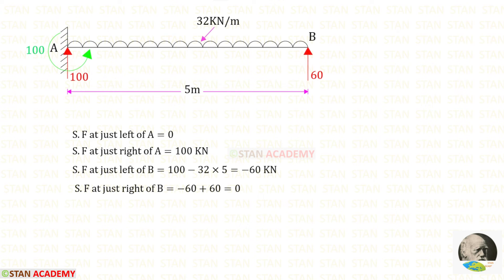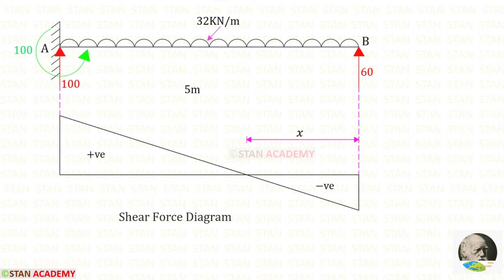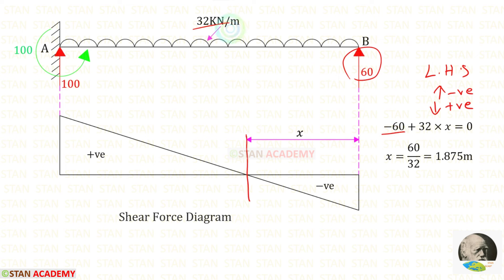Now we are going to draw the shear force diagram. We calculate shear force values from point A to point B using the right-hand side rule: upwards is positive and downwards is negative. Using this rule I have obtained the values. In the shear force diagram, there is a point where the shear force becomes 0, where the maximum positive bending moment will occur. Making a section at distance X from point B, and since the shear force is 0, using the left-hand side rule (upwards negative, downwards positive): 60 is upwards so negative, UDL is downwards so positive, multiplied with distance. Finally X = 1.875 m.